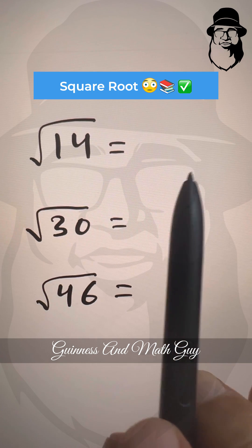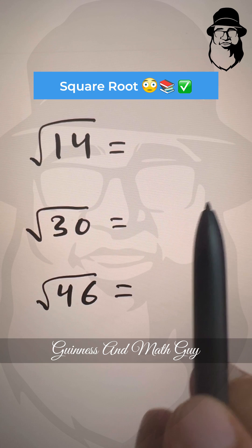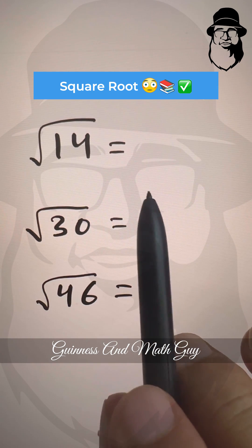How to get the approximate square roots to one decimal point for numbers that are not perfect squares.